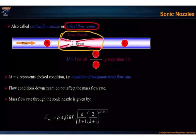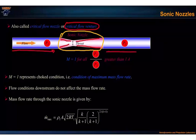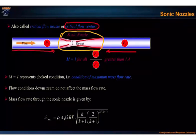To measure flow rate through a conduit, we consider an upstream and a downstream section. To measure the flow rate, we insert a sonic nozzle or critical flow venturi into the piping section. This is the operating principle behind the sonic nozzle.